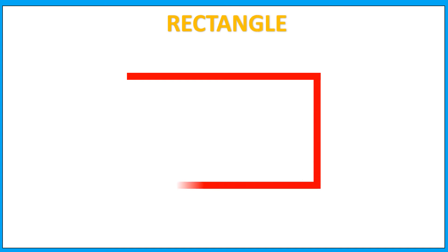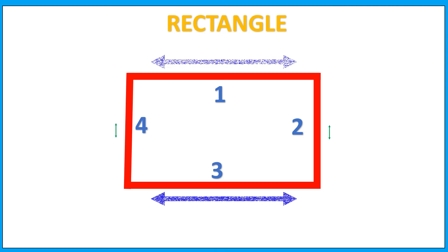This is a rectangle. A rectangle has four sides. Side 1, Side 2, Side 3, Side 4. Its opposite sides are equal. It has four corners.